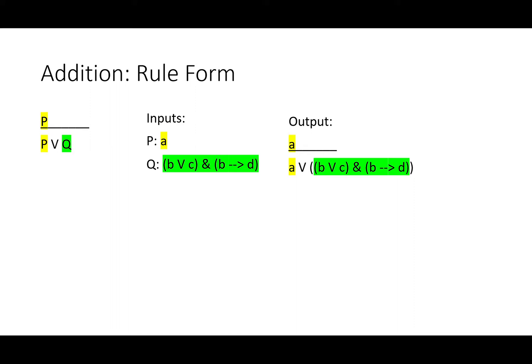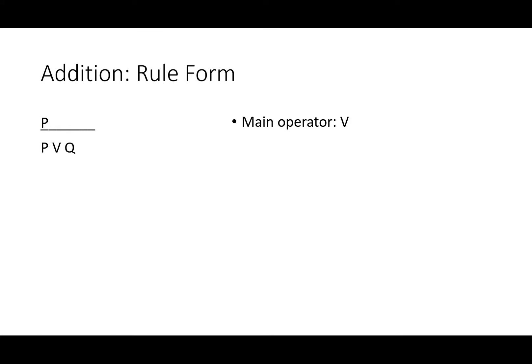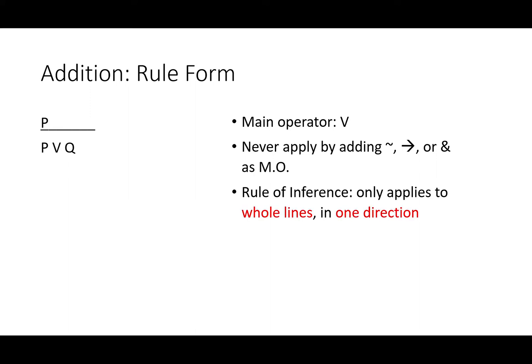Addition always adds a disjunction as the main operator. You can never apply addition by adding not, if-then, or and as a main operator. As a rule of inference, it only applies to whole lines and it only applies in one direction. You certainly can't go from either P or Q to just P by itself.